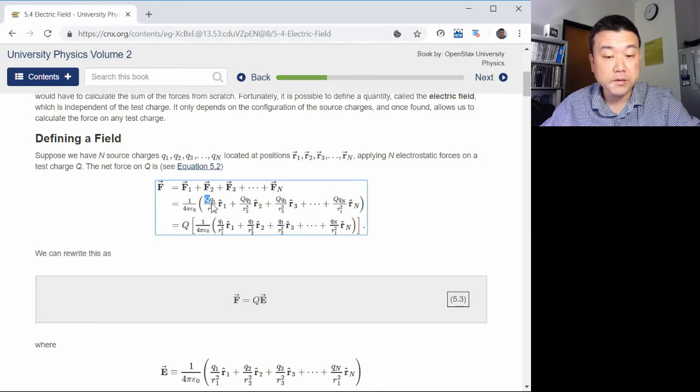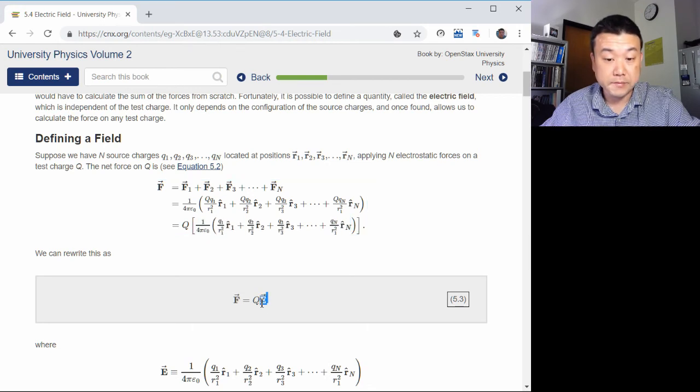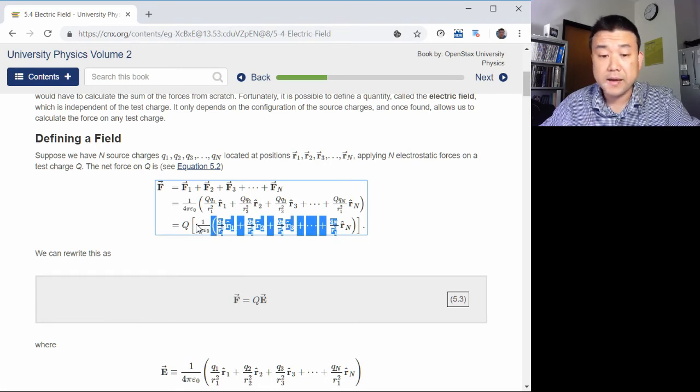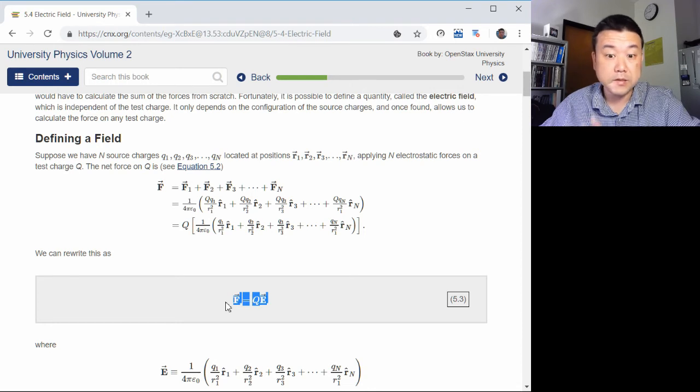And you are just factoring out charge Q so that you can describe all these other things that depend on things other than charge Q ahead of time. That's what electric field is. And the expressions here pertain to point charges. And what I want to highlight now is that this is the fundamental equation. This is correct even when we are not dealing with the point charges.